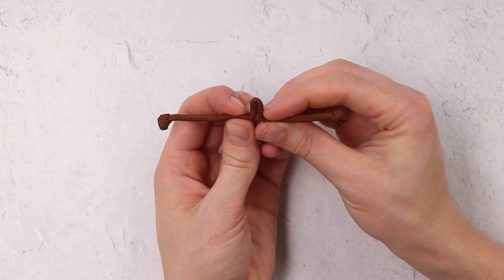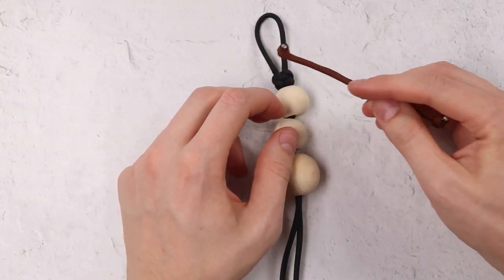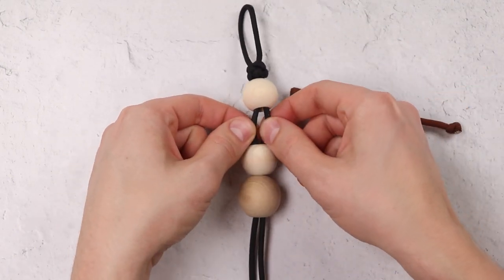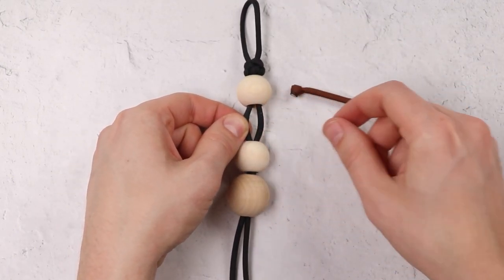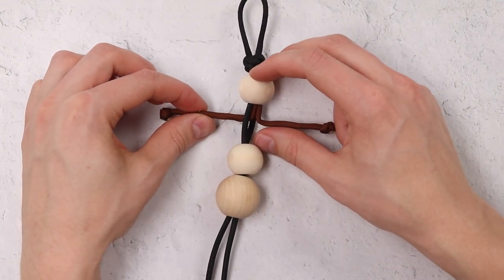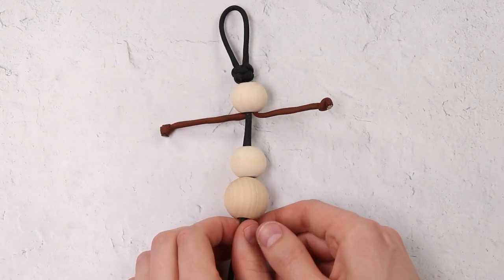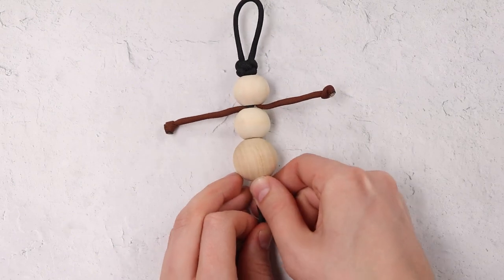Now that your arms are complete, let's add them on to the snowman. What we want to do is go right through the middle of those two center strands and then force that bent portion up into the head. Then we'll take those beads and bring them back up.